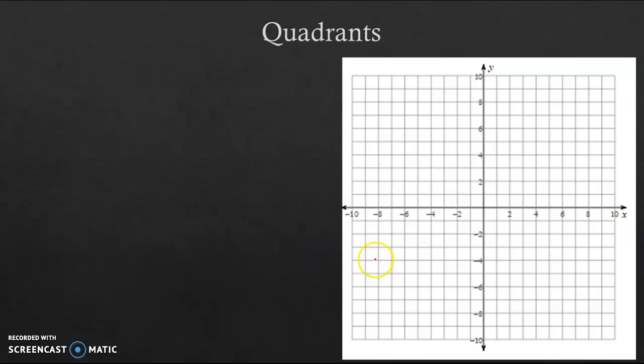Alright, so what we have here is what we call a coordinate plane. It is created from an x-axis and a y-axis. So the horizontal is our x-axis. The vertical is our y-axis, which correlates with the fact that x goes left and right and y goes up and down.